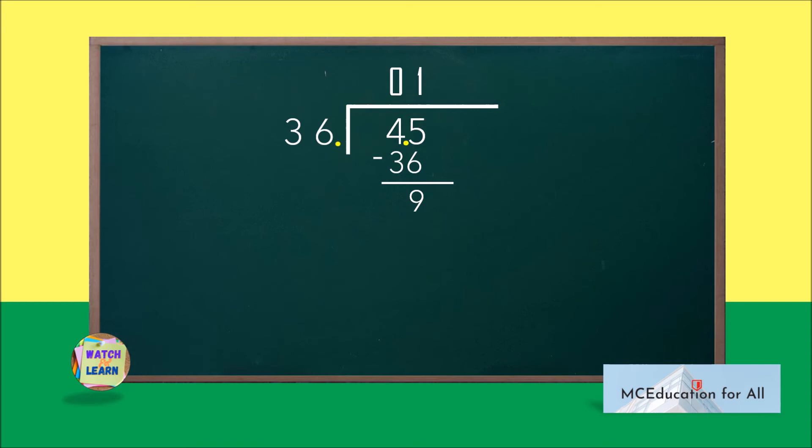As you can see, your remainder is not yet zero, so for us to continue dividing, add an extra zero to our dividend, then bring it down. 90 divided by 36 is 2. 2 times 36 is 72. 90 minus 72 is 18.